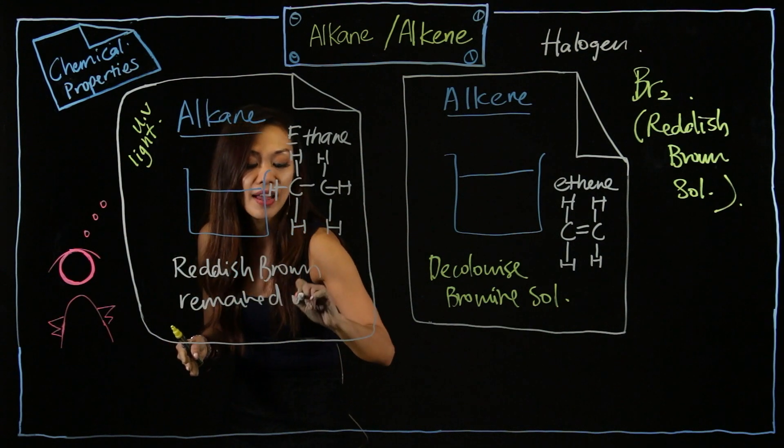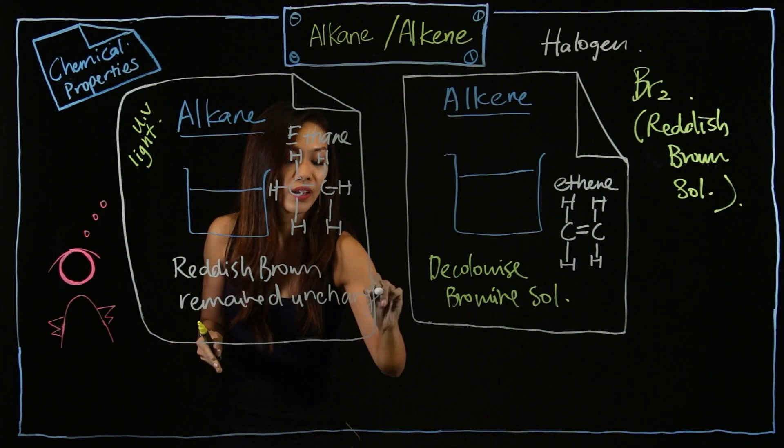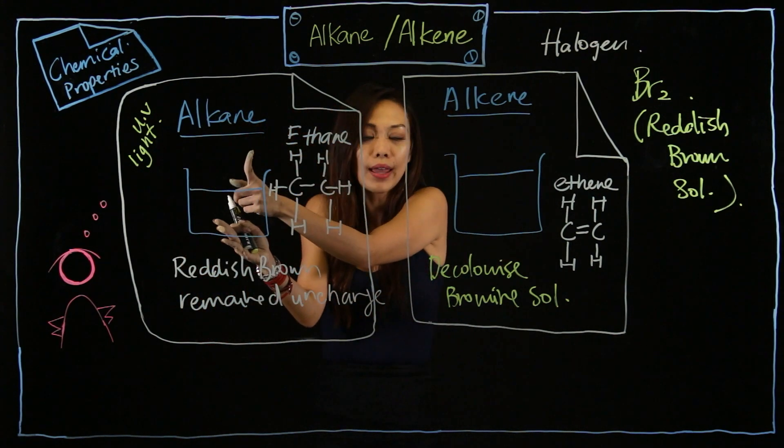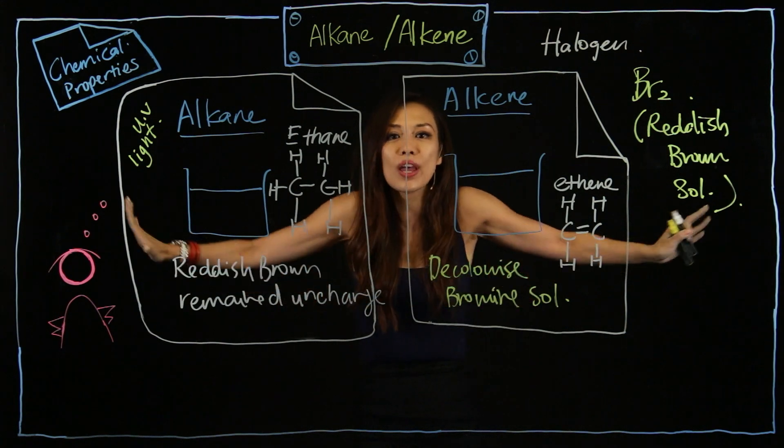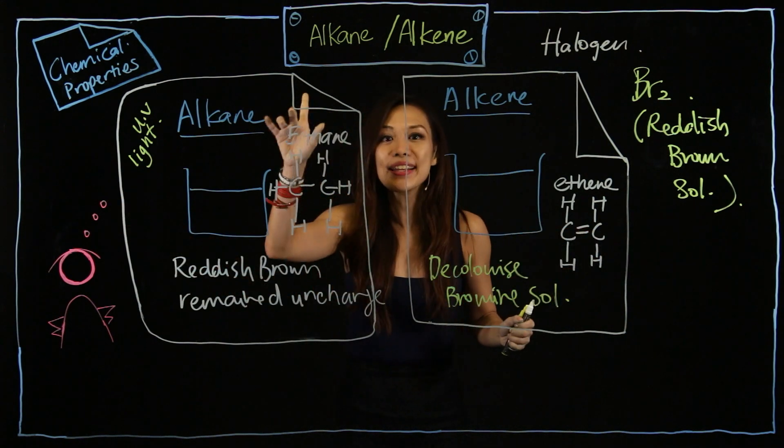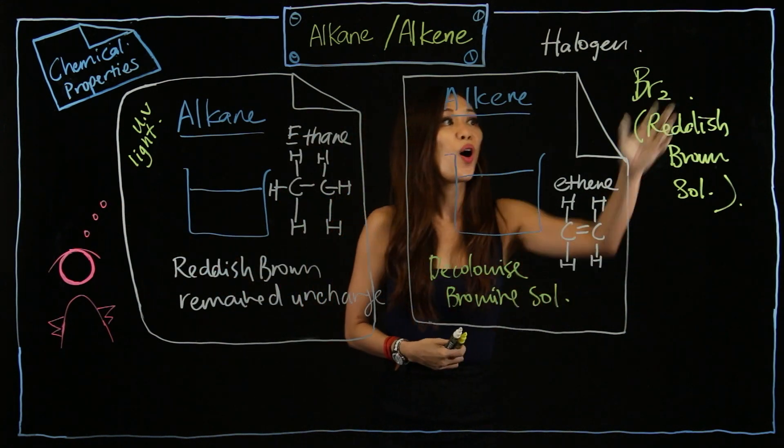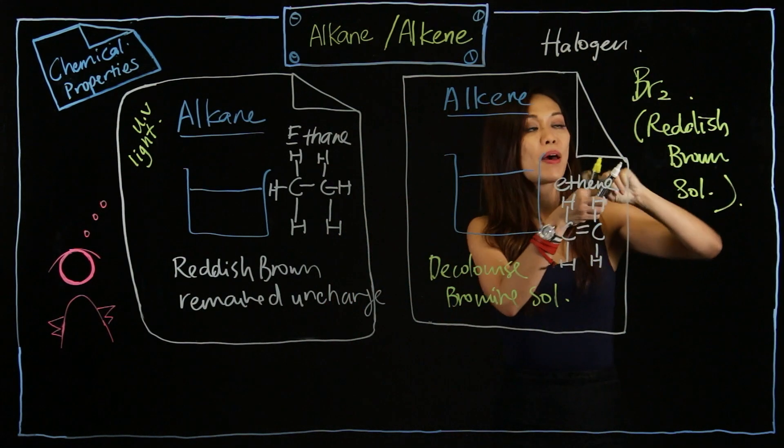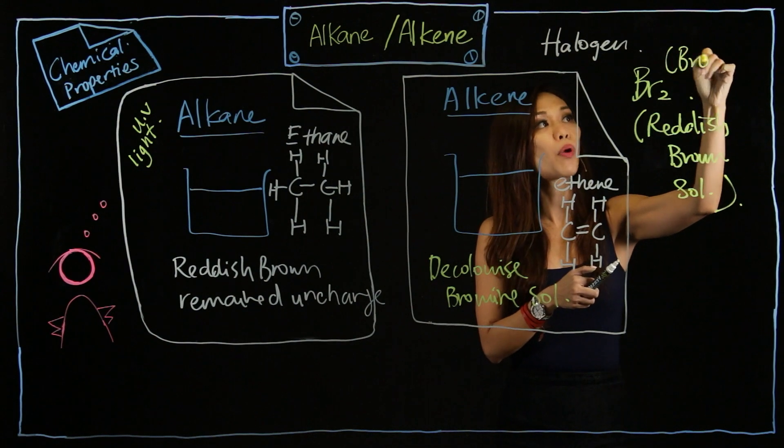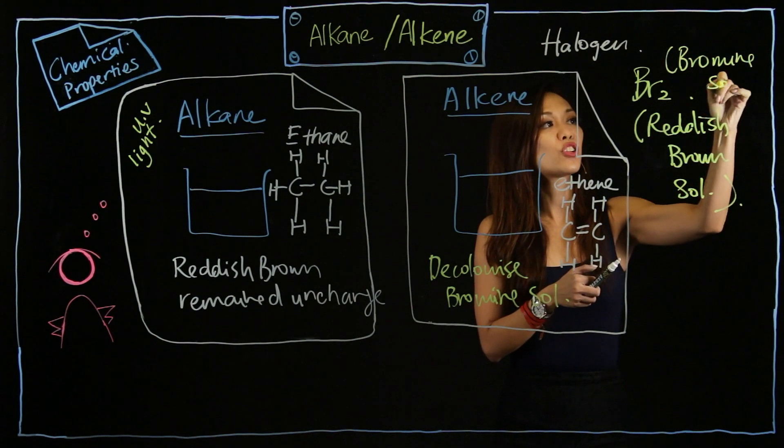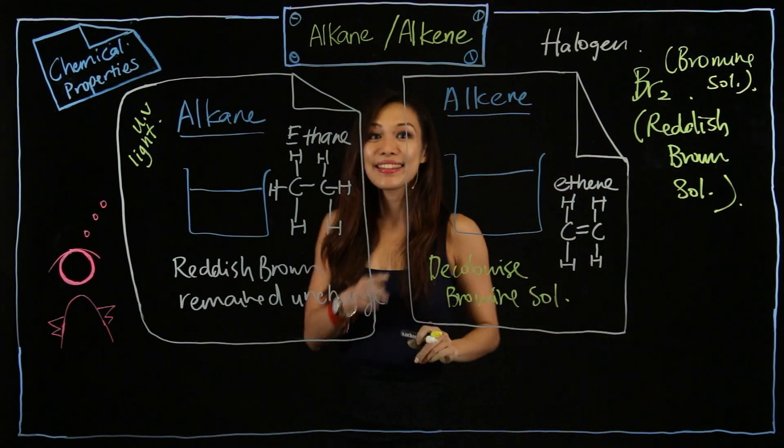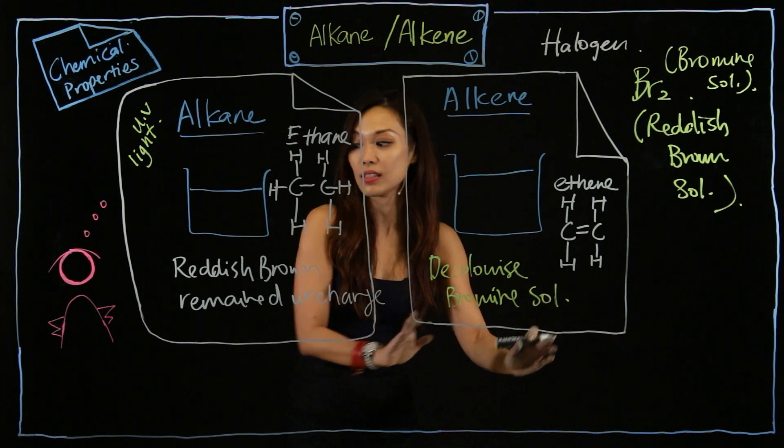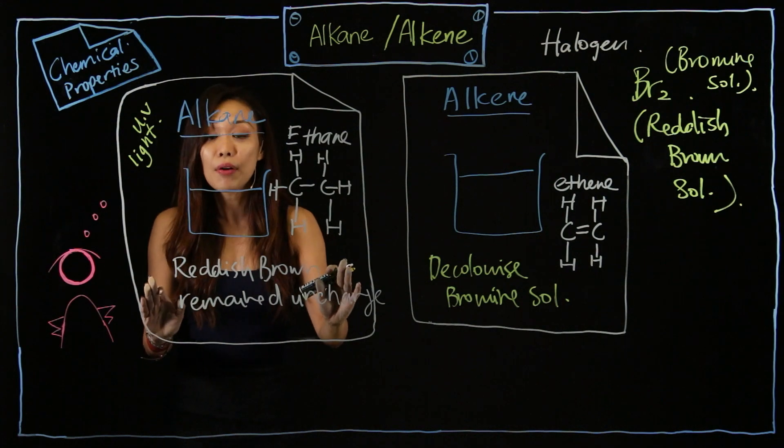Unless you allow UV light to come and attack alkane, if not nothing will change. So the one chemical reaction is you use bromine solution, Br2. And alkene will decolorize, causing it to change from reddish brown to colorless.